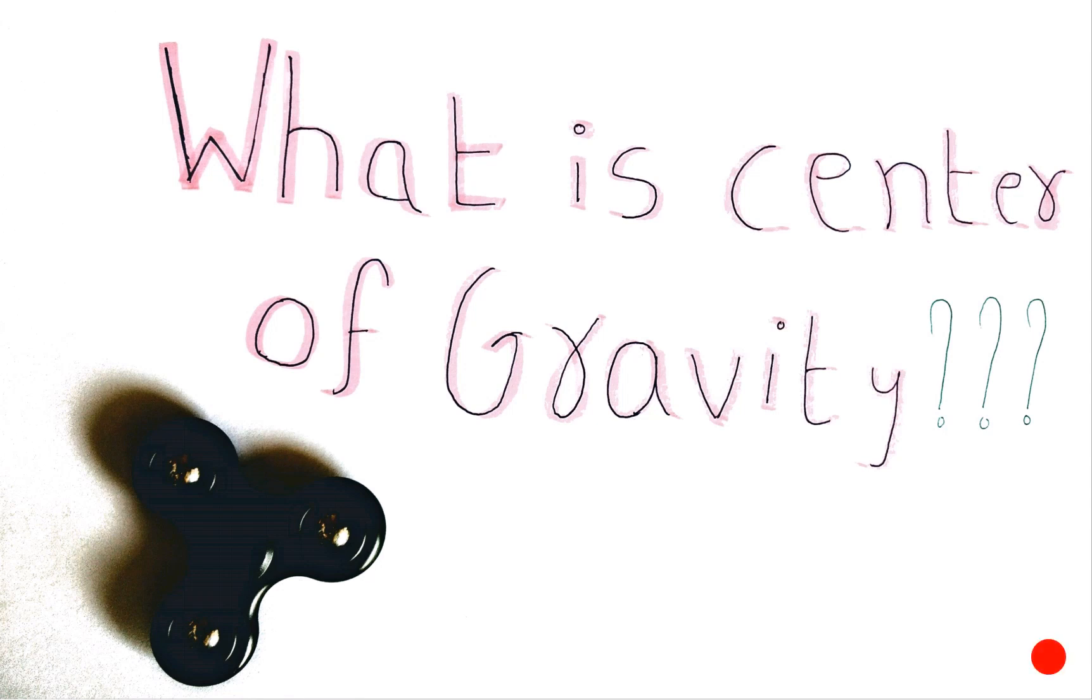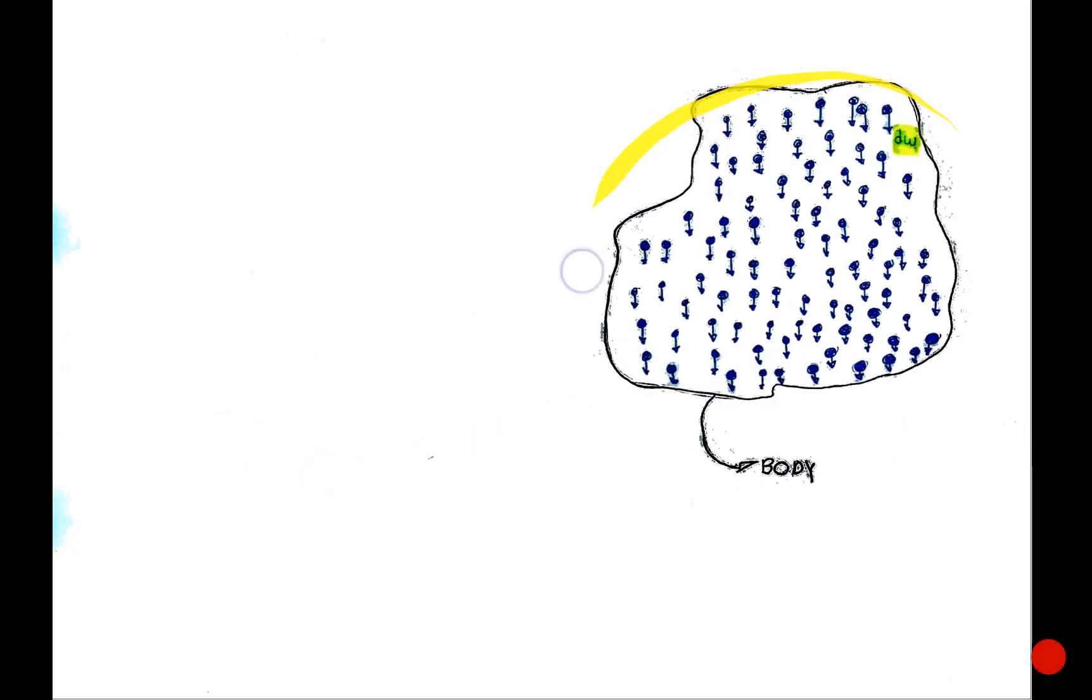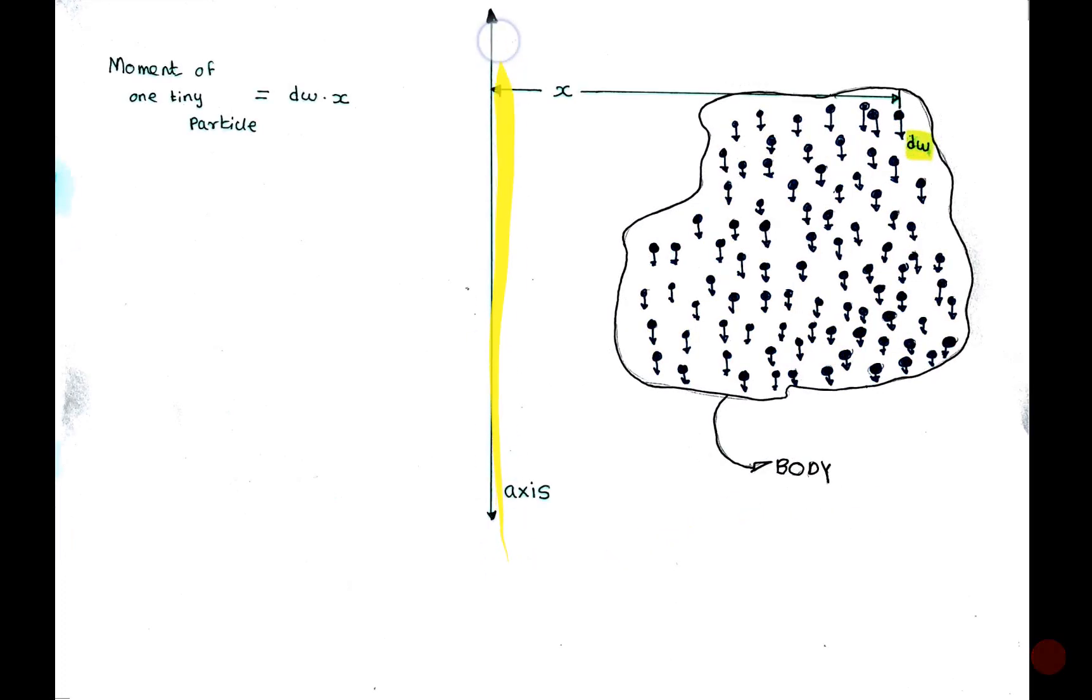Moving on to the topic, consider a body consisting of tiny particles having the weight dw. Now let us consider an axis. And the moment produced by this tiny weight dw will be written as the force dw into x, the perpendicular distance.